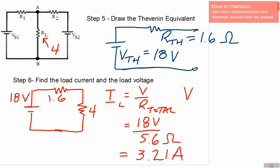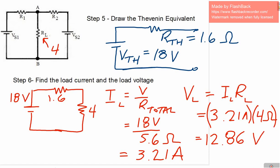Finally, we're going to find the load voltage. So we just need the load current and the load resistor. We can plug that in, 3.21 amps multiplied by 4 ohms. So we get a load voltage of 12.86 volts. So there, we found the load current, we found the load voltage, which was our goal, using a Thevenin equivalent circuit.